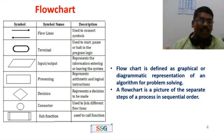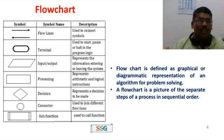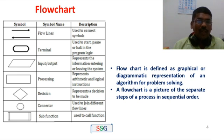You can use a Rectangle box for the Process symbol. It represents arithmetic and logical instructions — any instruction. In a flowchart, these symbols are used the most: start/stop uses the terminal symbol, input/output uses the parallelogram, and processing uses the rectangle.